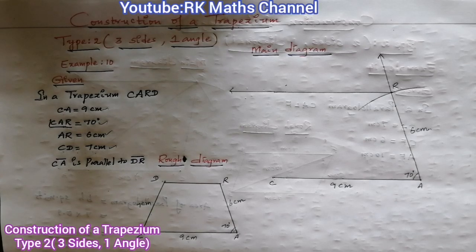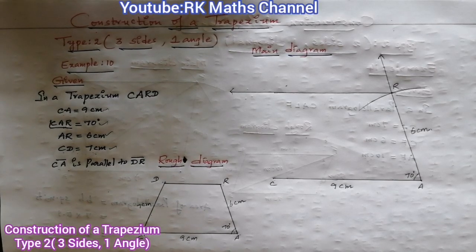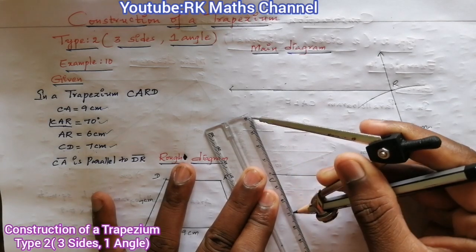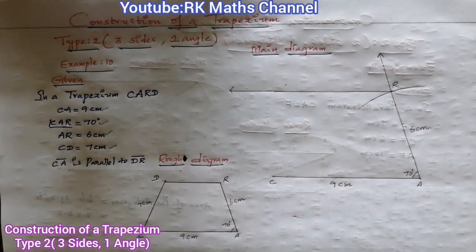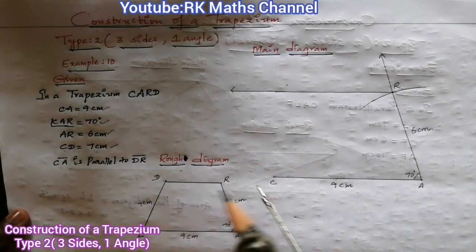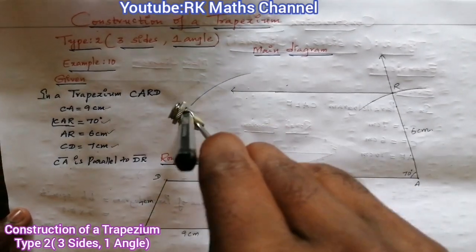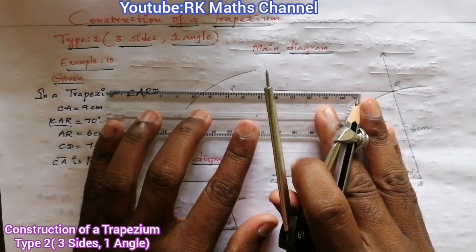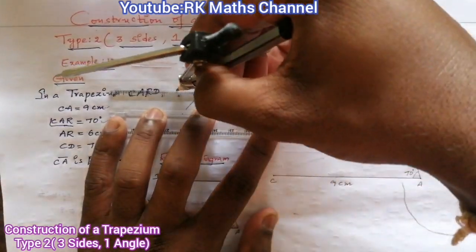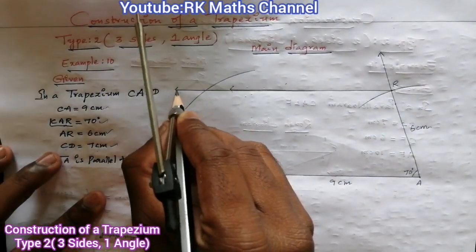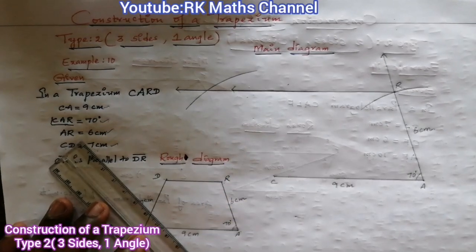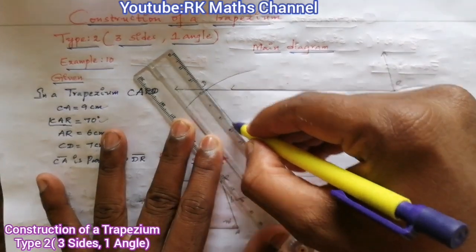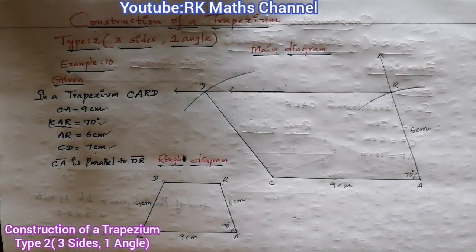The parallel line through R is now drawn. CD is equal to 7 cm, so place the compass set to 7 cm at point C and draw an arc. The arc intersects the parallel line — that intersection point is D. Join C to D and join D to R to complete the trapezium CARD.